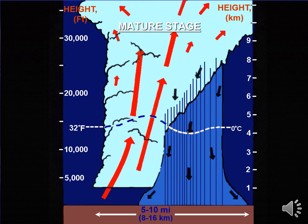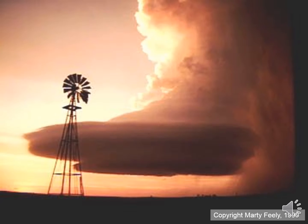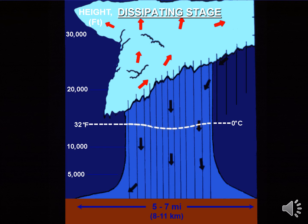During the mature phase, the storm is at its strongest. Eventually, the rain-cooled downdraft air hits the ground and spreads outward, cutting off the updraft of the storm. Once this occurs, the thunderstorm becomes completely dominated by downdrafts and moves into its dissipation phase. In the dissipation phase, the cloud tops collapse and the cloud edges become ill-defined. The entire life cycle of a thunderstorm, from towering cumulus to dissipation phase, takes on the order of 20 to 30 minutes.